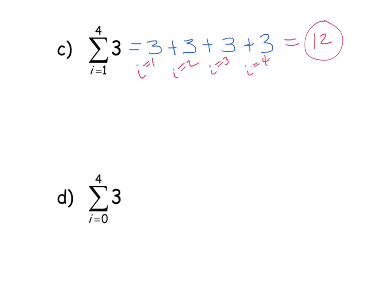Compare that to this example here. i is starting from 0, and so again no matter what, I'm going to get a 3. When i is 0, I get a 3. When i is 1, I get a 3. When i is 2, I get a 3. When i is 3, I get a 3. And when i is 4, I get a 3.